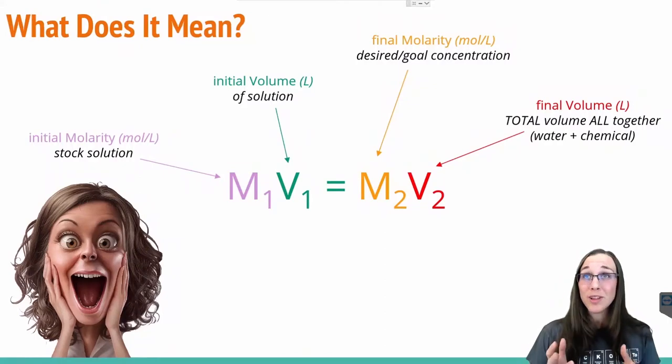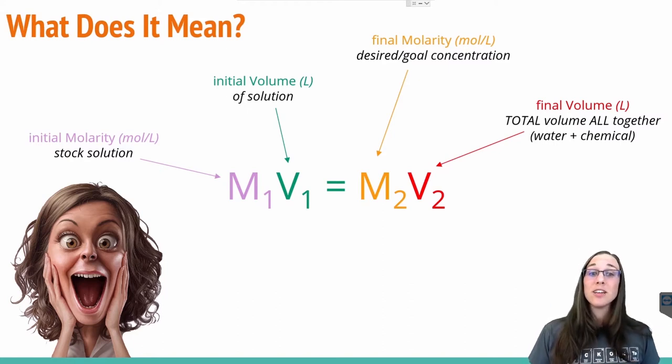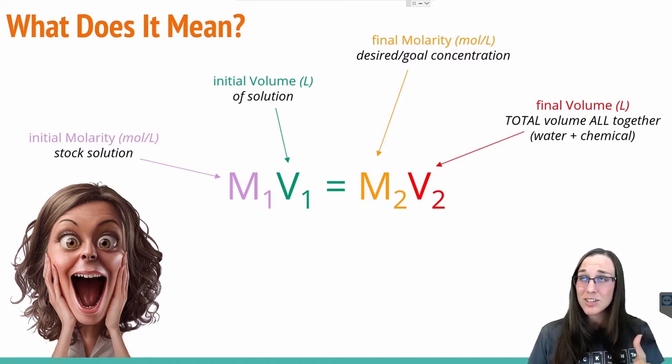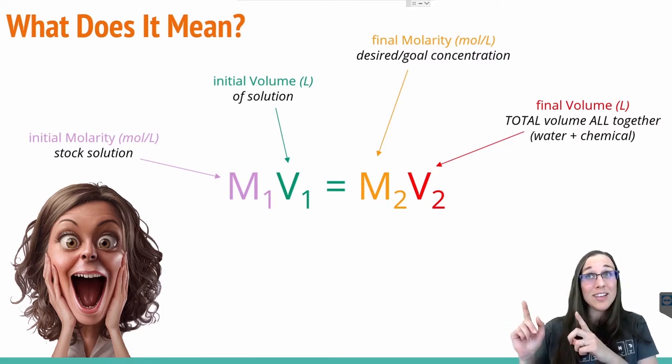The M1 is the initial molarity, the moles per liter that you started with from the stock solution. The V1 is your initial volume of solution that you used in liters. That's important here because a lot of questions will ask you in milliliters, and you have to convert it to liters before you can plug it into this calculation correctly.